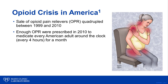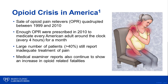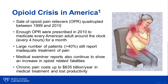The United States is currently experiencing an epidemic of prescription opioid misuse and overdose. Increased prescribing and sales of opioids — a quadrupling since 1999 — helped create and fuel this epidemic. In fact, enough opioid pain relievers were prescribed to medicate every adult American around the clock, giving them one pill every four hours for a month. Yet despite the use of potent narcotics to manage pain, 40% of patients still report being inadequately treated for pain. In the end, chronic pain is a major contributor to health care costs, estimated at over $635 billion per year in medical treatment and lost productivity.